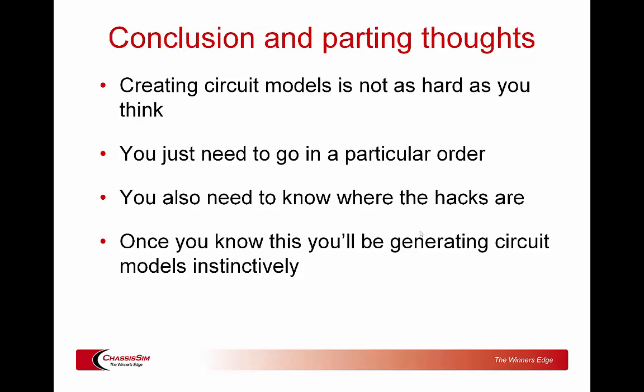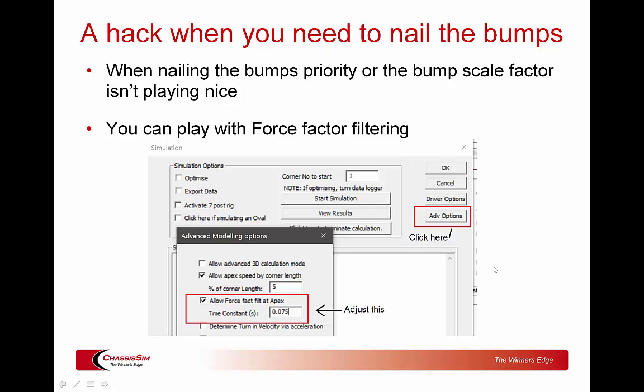To sum up, creating circuit models is not as hard as you think. What you've got to do is work in a particular order and be systematic about it. Once you know where the hacks are, it all comes together very quickly, and you'll get to the point where you're punching out circuit models in about 20 minutes to half an hour. If you're an existing ChassisSim customer, put this into practice. If not, sign up to our online simulation, take it for a spin, and we'll catch you in the next episode of Dan's Vehicle Dynamics Corner or the next ChassisSim video tutorial.